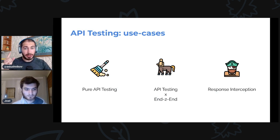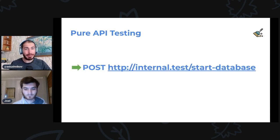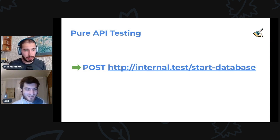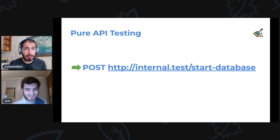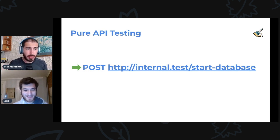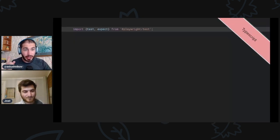The response interception we saw before, but the other ones are cool new demos. First one is pure API testing. So pure API testing — we're just doing an HTTP request. This is like fetch, but not fetch in the browser. We're requesting a URL that could start a database, or in this demo we'll show different use cases. We'll use the GitHub API — that's where the 'API' comes from — yes, HTTP API.